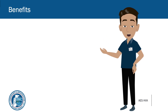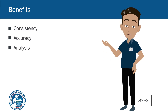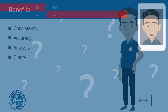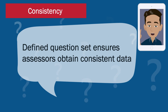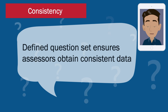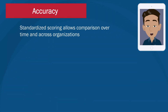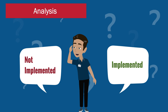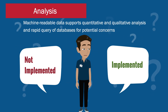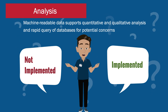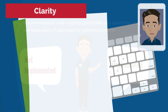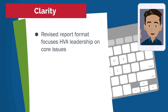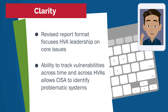Here are four key benefits of the HVA 3.0 methodology: consistency, accuracy, analysis, and clarity. HVA 3.0 has a defined question set that ensures all assessors gather the same information, allowing CISA to maintain consistent data sets across all HVA assessments. The standardized scoring mechanism reduces subjectivity in risk rating determinations, facilitating comparison over time and across organizations. The binary question format of implemented or not implemented makes data easy to analyze in aggregate, supporting both quantitative and qualitative analysis, and allows rapid querying on specific weaknesses or vulnerabilities. CISA has also revised the report format to streamline delivery of information to leadership and to identify systems with specific and concerning weaknesses, then track their status.